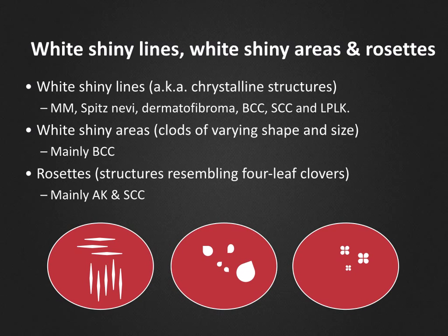White shiny areas, which are most frequently seen in BCCs, are shiny white clods or shiny structureless areas only seen with polarized light. Lastly, rosettes are small groups of four small white shiny dots organized in a formation that resembles a four-leaf clover. They are mainly found in premalignant and malignant keratinizing tumors such as AKs and squamous cell carcinomas, and they are believed to be due to keratin filling the follicular openings.